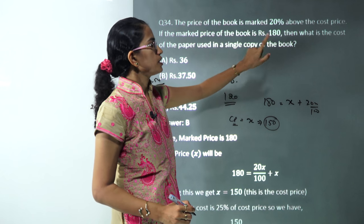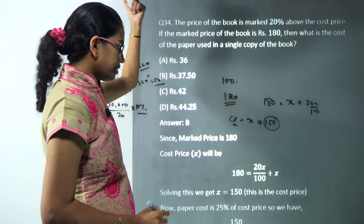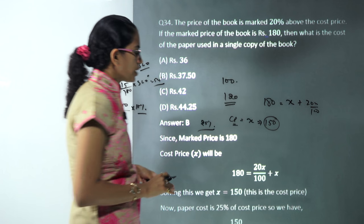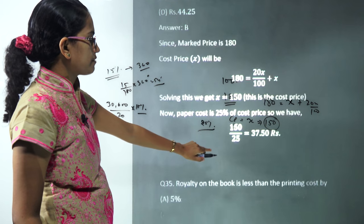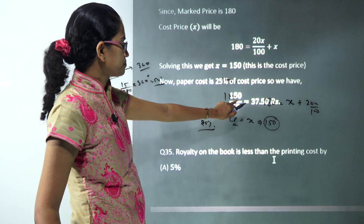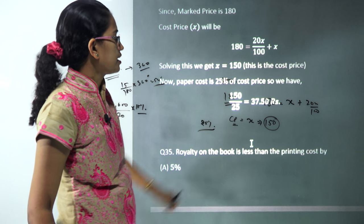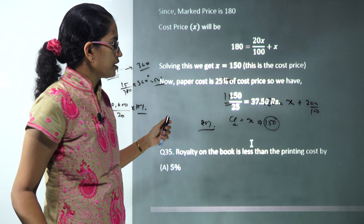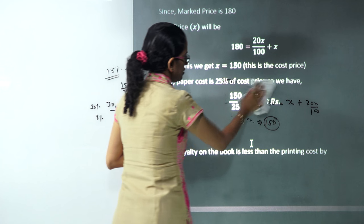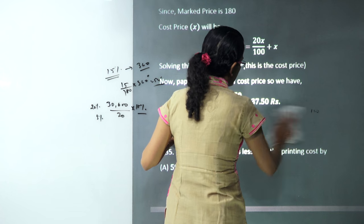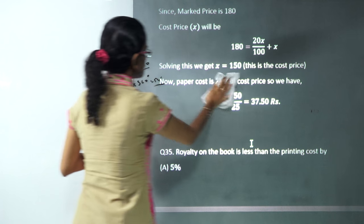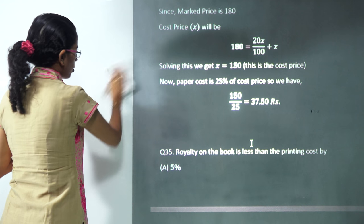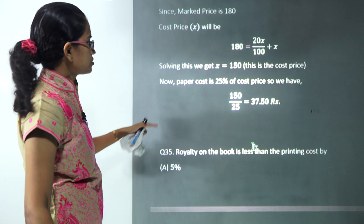What is the cost of the paper used in the single copy of the book? In the pie chart we saw the cost of paper as 25%. So I will calculate 25% of this 150.